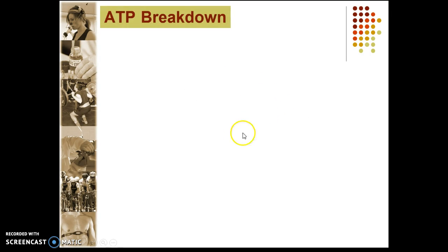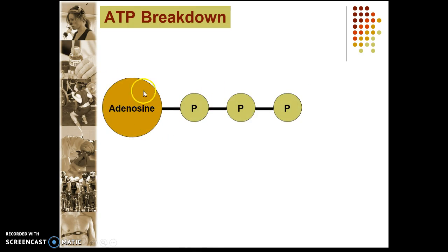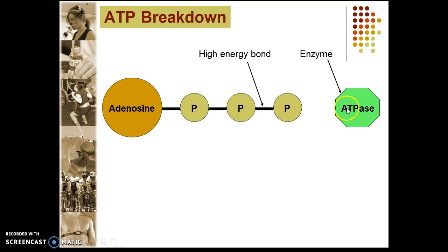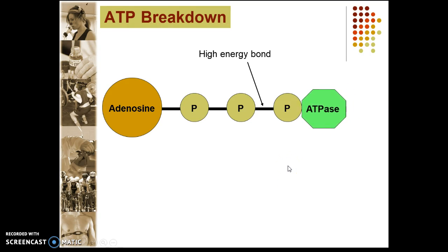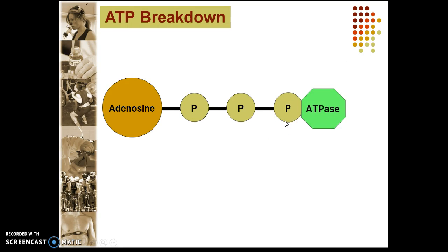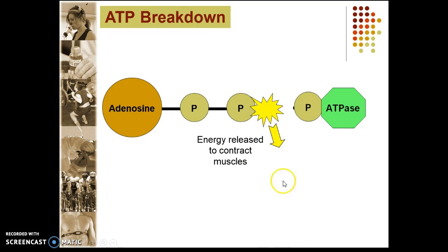Looking at ATP breakdown — ATP gives you three seconds of energy, and we need to know how that happens. For any kind of molecule to be broken down, an enzyme must be present. You have one adenosine with three phosphate molecules, and an enzyme called ATPase comes in and basically causes a split between the second and third phosphate. Energy is released because that area is a high-energy bond.